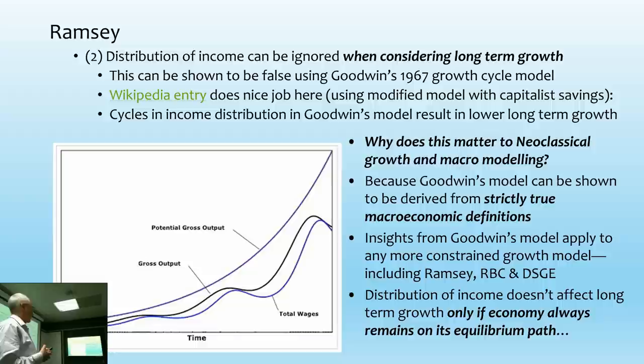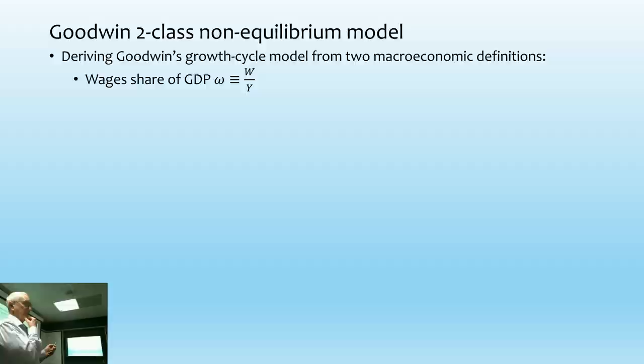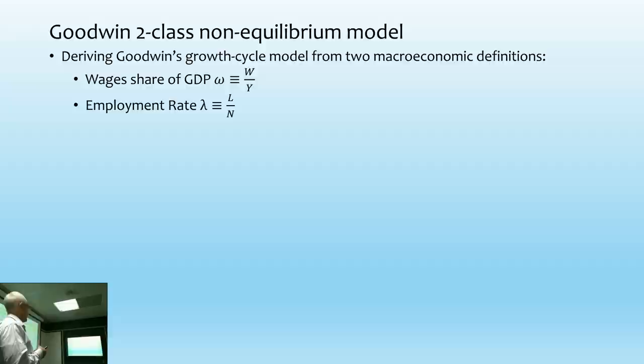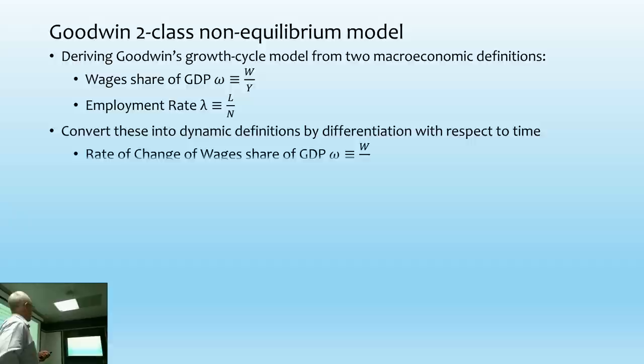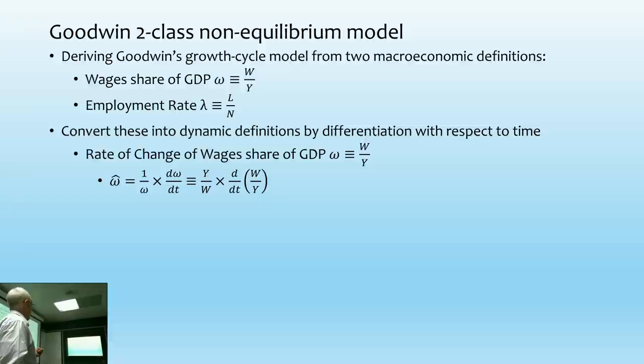The only way that distribution of income doesn't affect long-term growth is if the economy is always in equilibrium. That's fine for a neoclassical — they're happy to accept that. But I want to point out that if that doesn't apply, they're wrong about ignoring distribution. Goodwin's model starts from two definitions: the wages share of GDP, which I use omega for — W divided by Y, total wages divided by total GDP — and the employment rate, total labour force divided by total population. You can convert them into dynamic statements which are still definitional by taking the rate of change without doing any additional assumptions.